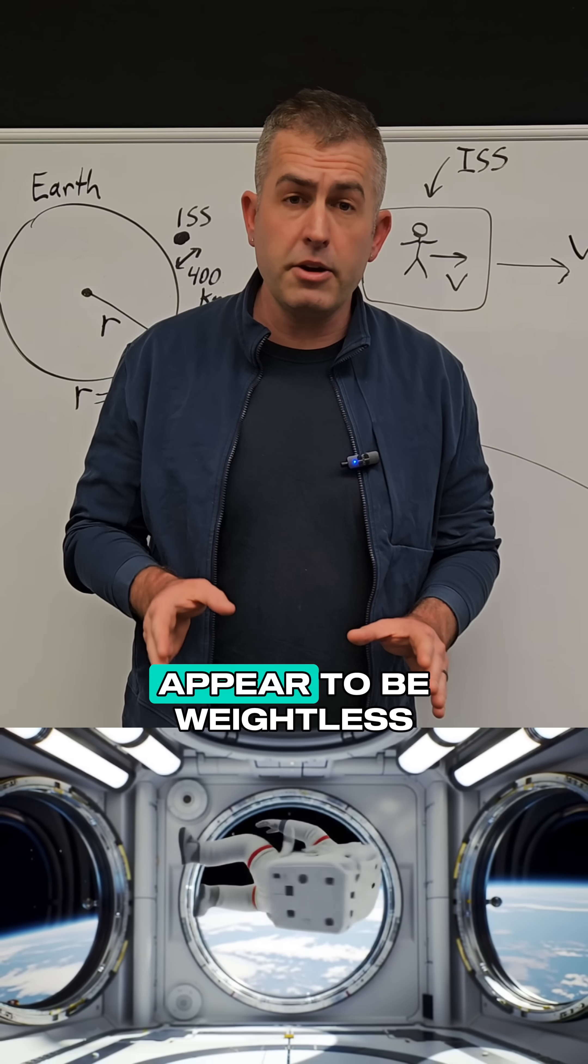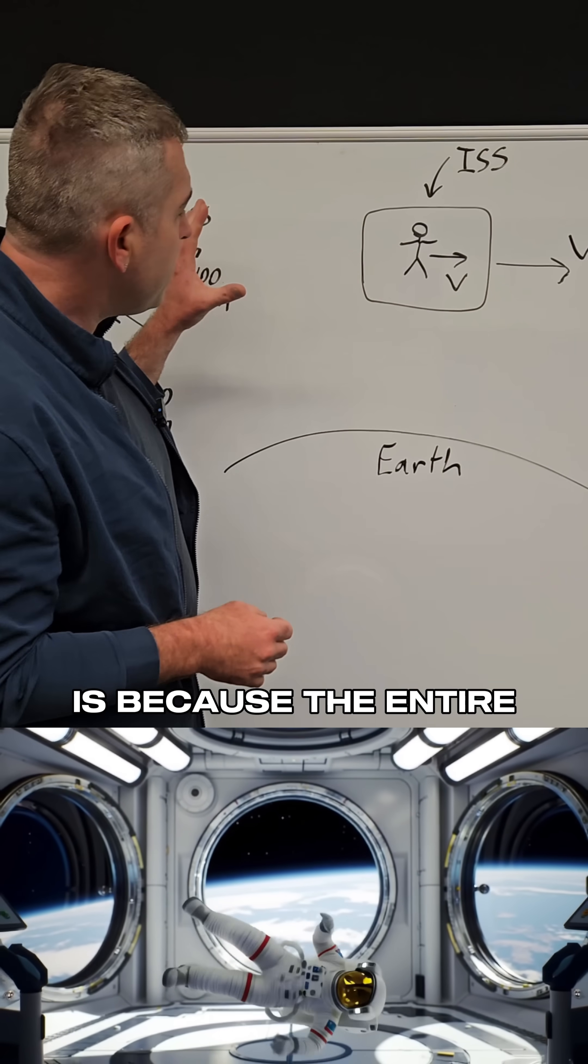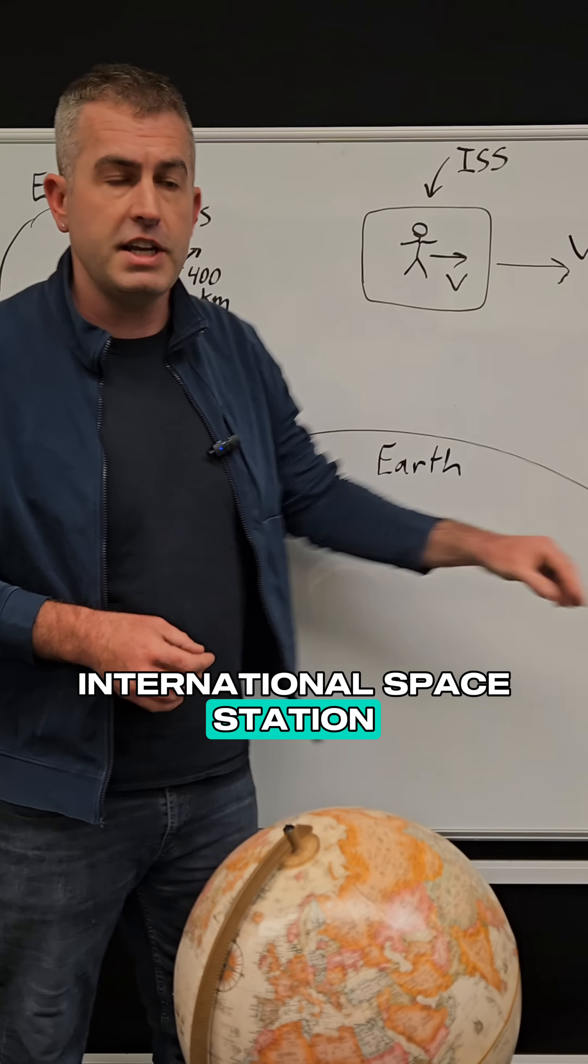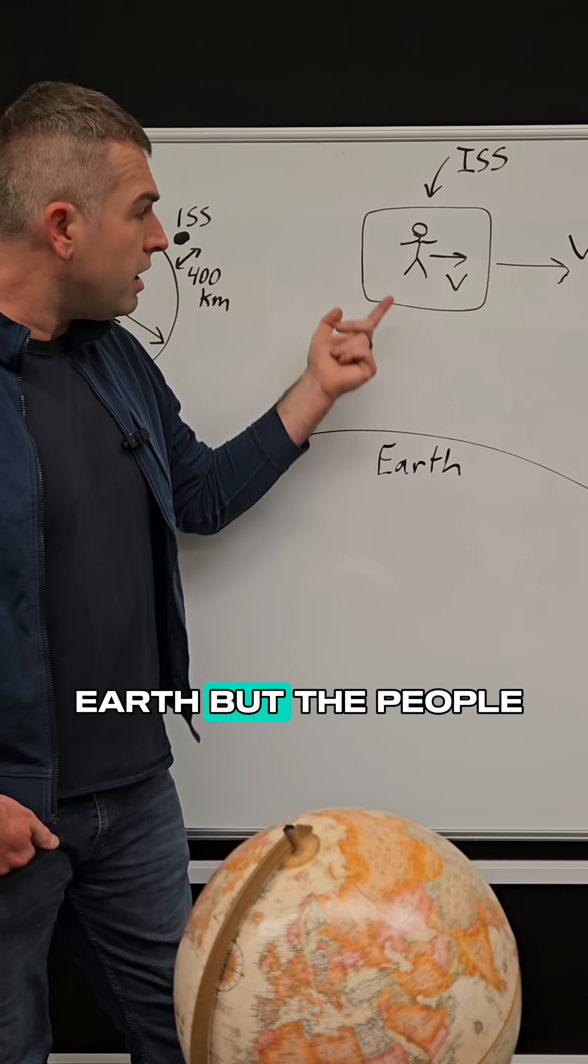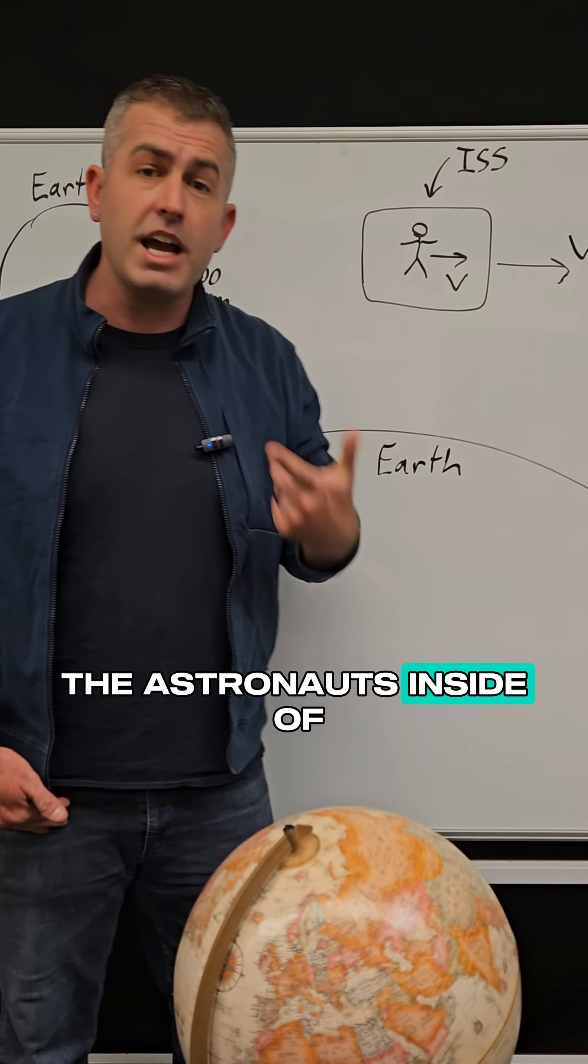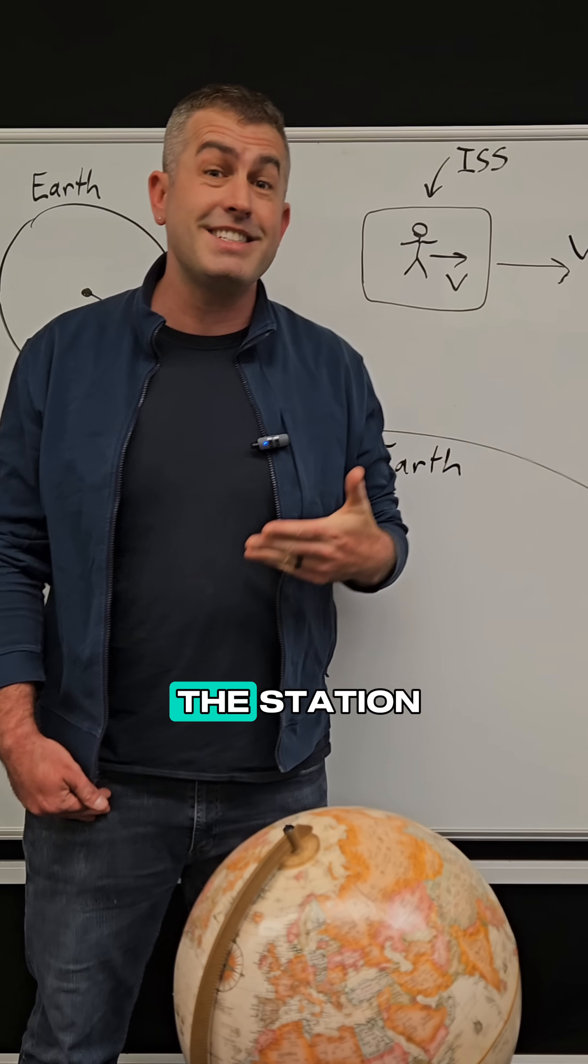The reason that astronauts appear to be weightless, or the reason they feel like they're weightless, is because the entire International Space Station is moving at some really high velocity as it orbits the Earth. But the people, the astronauts inside of the space station, are also moving at the same velocity as the station itself.